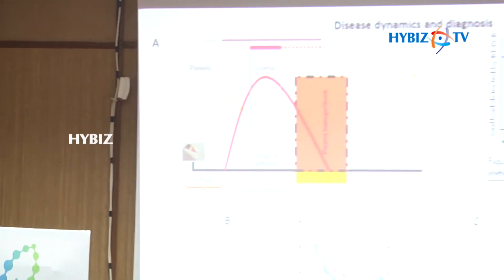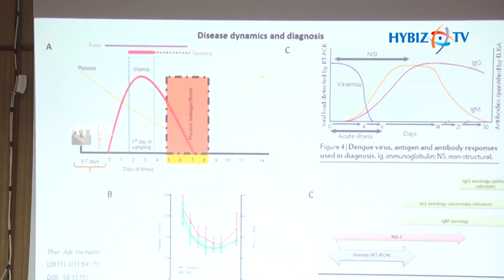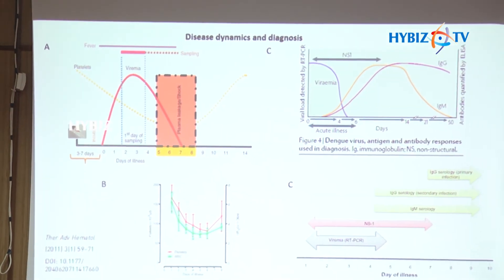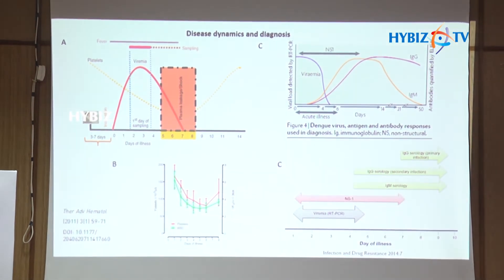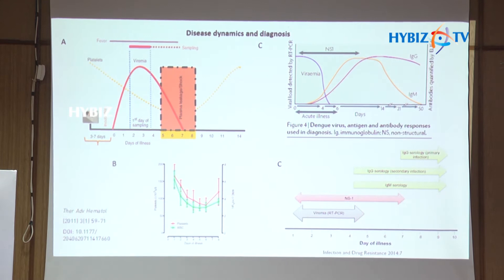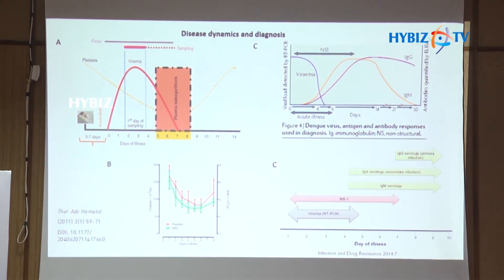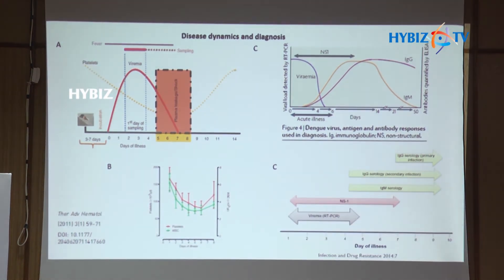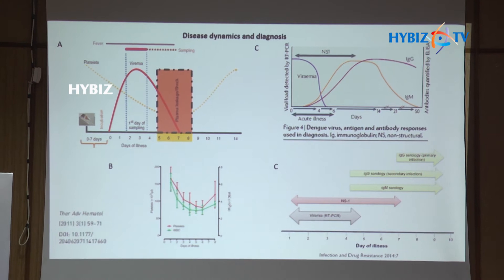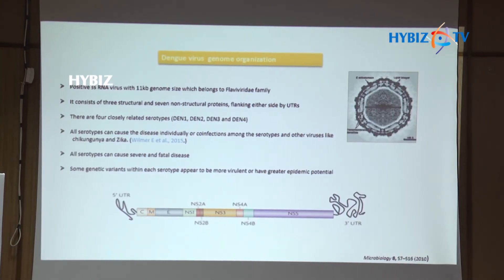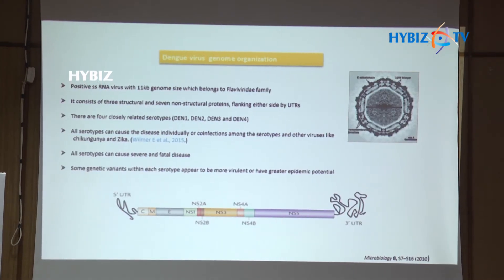Based on viral behavior, the NS1 test is most commonly used in the first few days, up to 5 days. After that, it cannot be reliably checked. IgG and IgM antibody tests are also available, though each has certain limitations. These are just a few things about this virus.